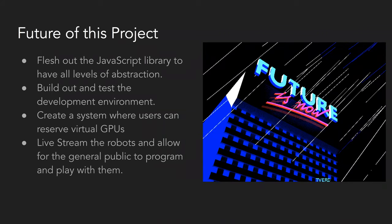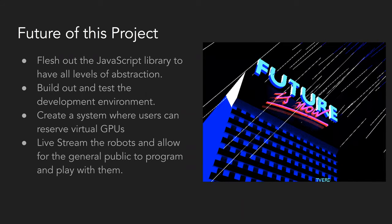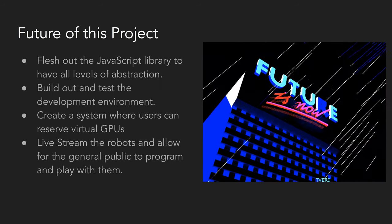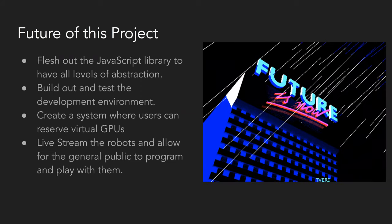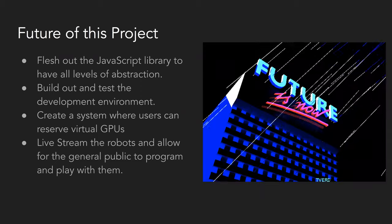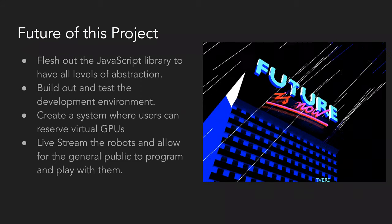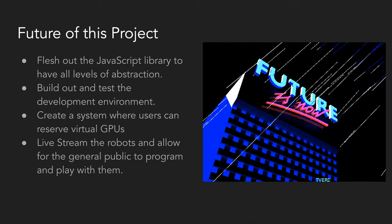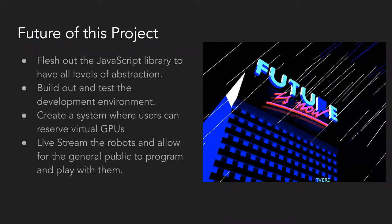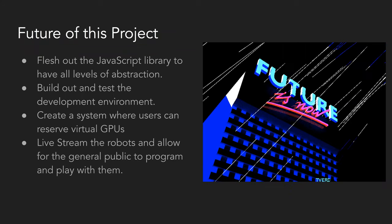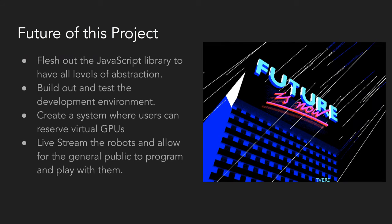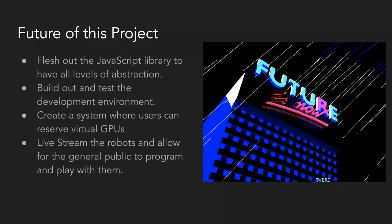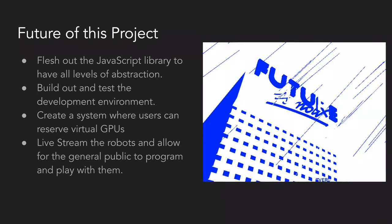Looking at the future of this project: right now I only have a basic JavaScript library that can do basic robot tracking and send basic commands. Before any real testing with students, I need to build out at least the full Scratch interface. I also want to prioritize the virtual and remote GPU system, as I think this will be a key feature for getting schools on board. And now that we're all at home, I want to build a system where people can, through an interactive live stream, program and drive the robots on a Twitch stream — anyone can log in, say they want to control robot number three, get a panel, and start programming while watching the robot on the stream.